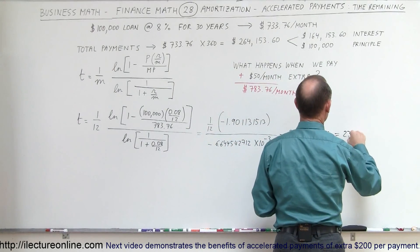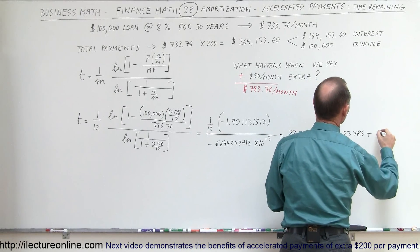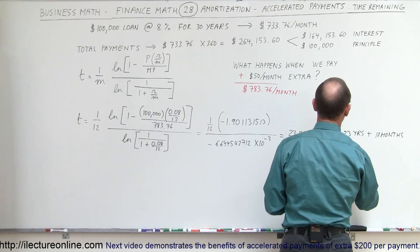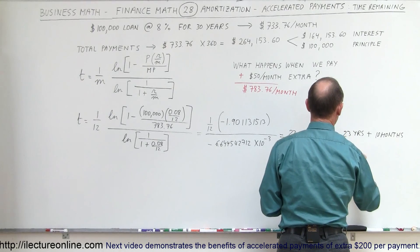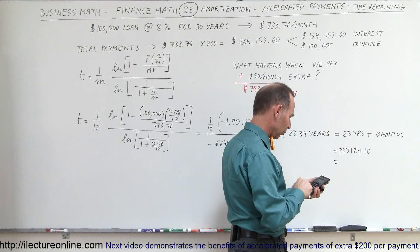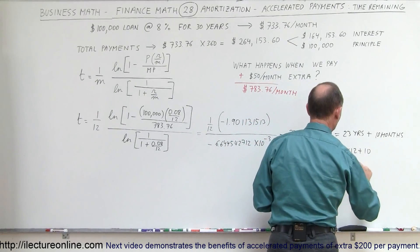let's round that off to 10 months, which means that's 23 times 12 plus 10. So 23 times 12 plus 10 equals 286 payments.